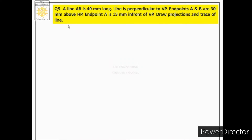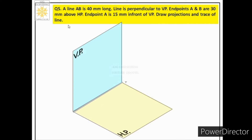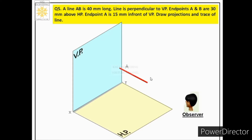Let us understand this case through a pictorial view. In this statement it is mentioned 'in front of VP' and 'above HP', which means the line is in the first quadrant. So we have represented the pictorial view of the first quadrant and will now place the line in it.